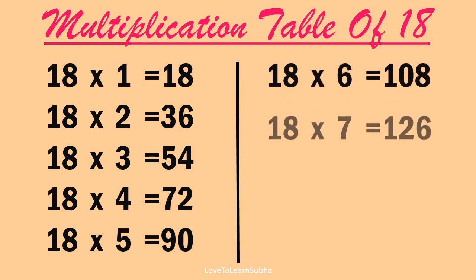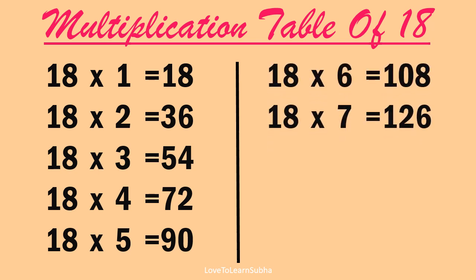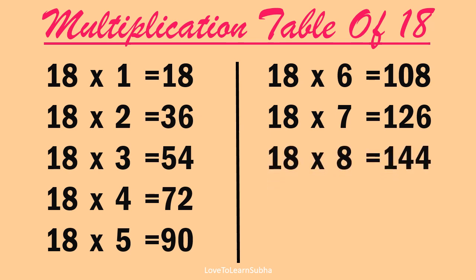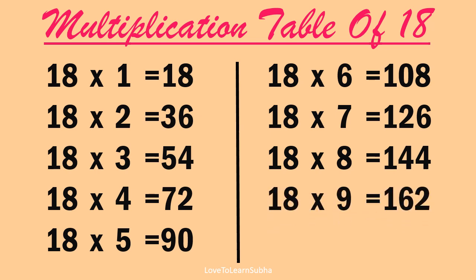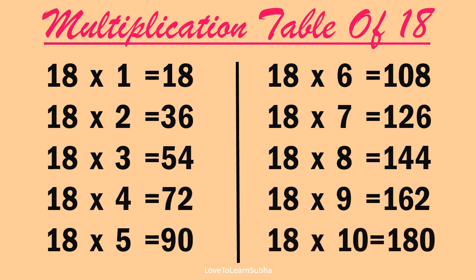18 7s are 126, 18 8s are 144, 18 9s are 162, 18 10s are 180.